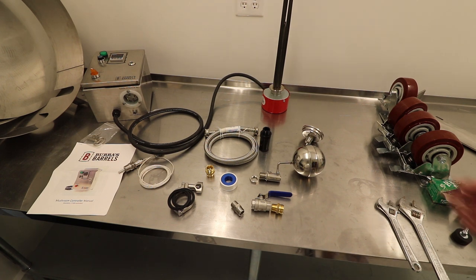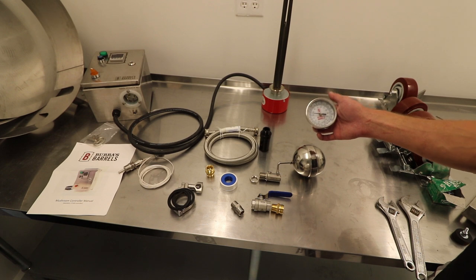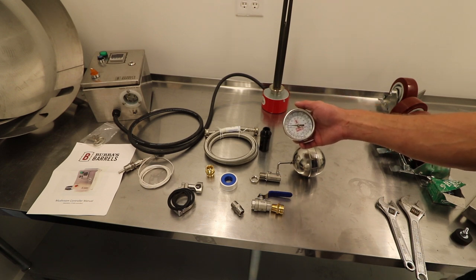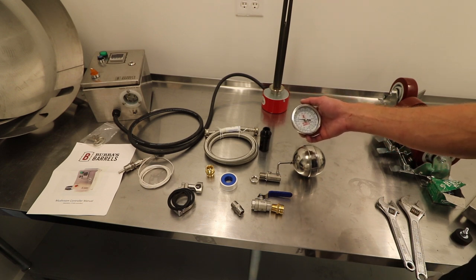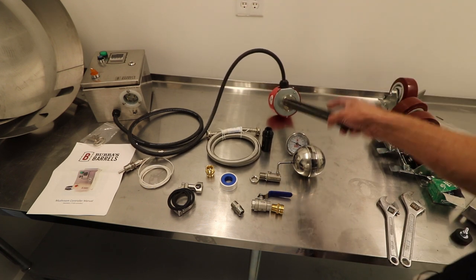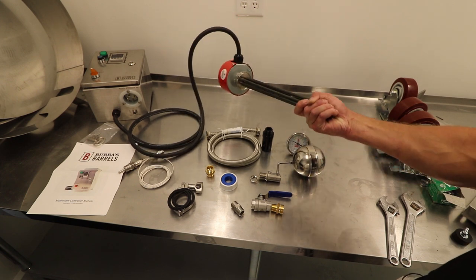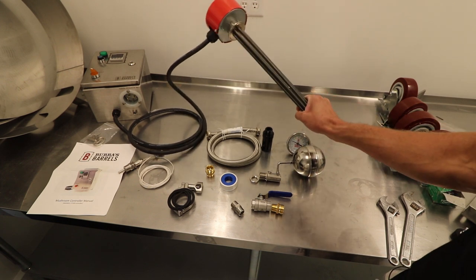They also throw in a gauge that goes on the lid. So if you're not getting a temperature controller, at least you have that to where you can get an idea of what kind of temperature you're dealing with at the top of the drum. And then one of the options is to have it come with an element. This is the element that they include made in the United States. It's definitely heavy duty, should last a very long time.